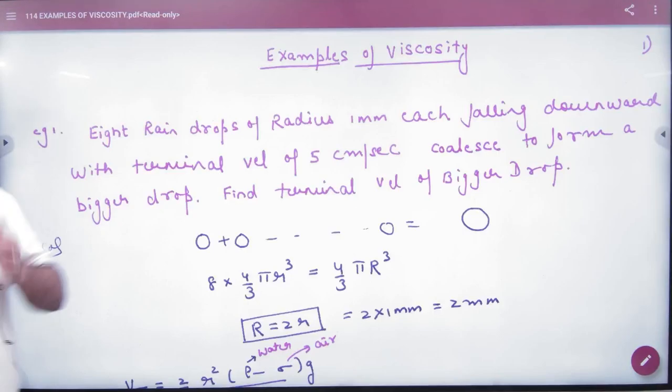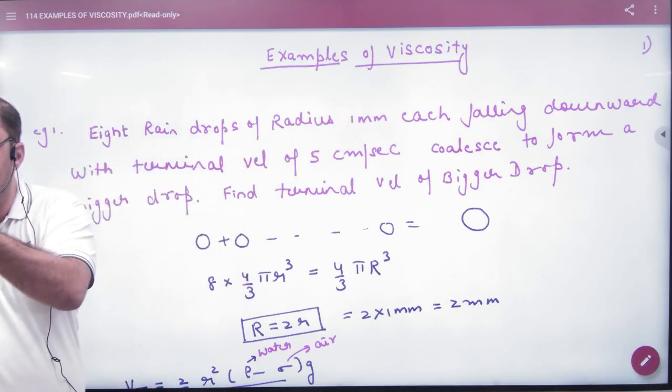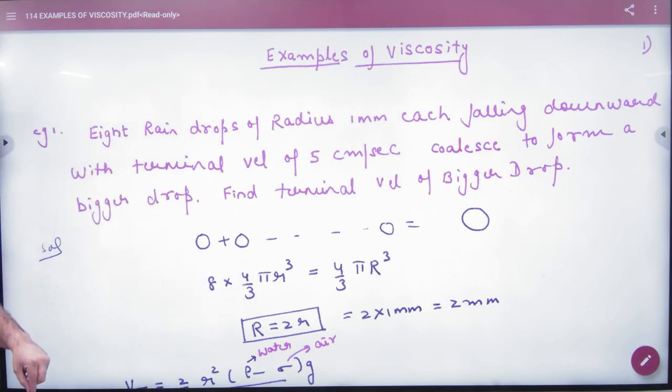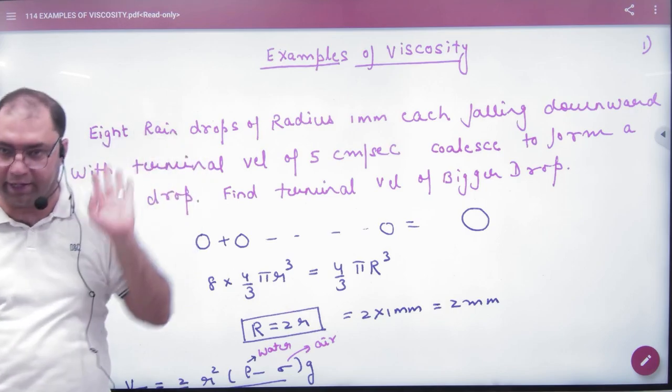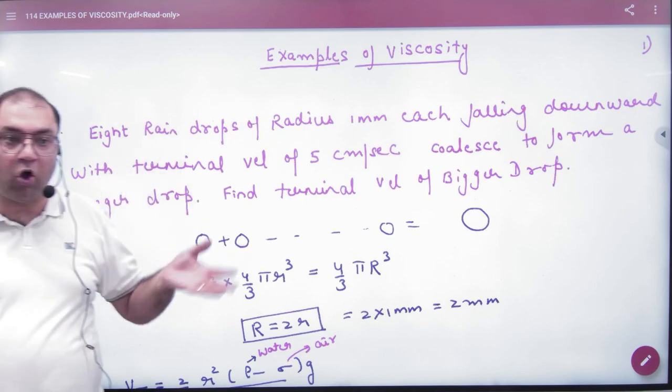The question is that eight rain drops, each with a radius of 1 mm, are falling downward with a terminal velocity of 5 cm per second. The small drop velocity is 5. It says that eight drops combined to form a bigger drop.